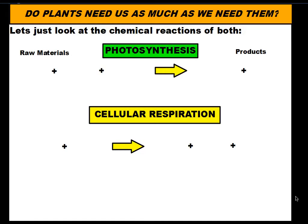Photosynthesis is the way plants are actually able to use sunlight, carbon dioxide, and water to make sugar. And cell respiration is the way organisms use that sugar to create energy so organisms can do whatever it is that they need to do to live.